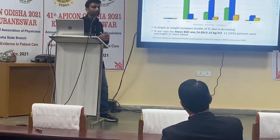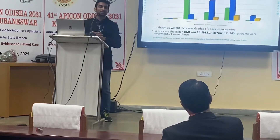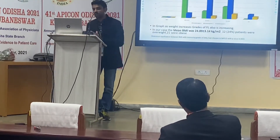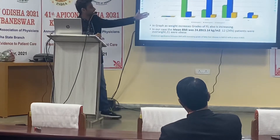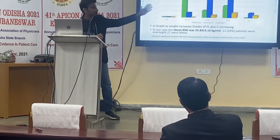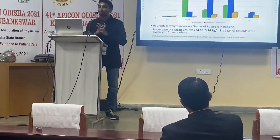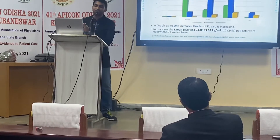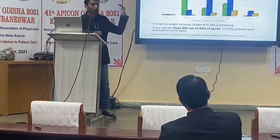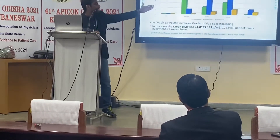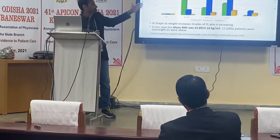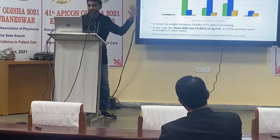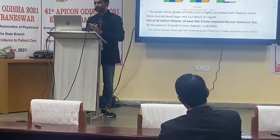The mean BMI was 24.89, which is significantly high in our study population. As shown in the graph, when BMI exceeds 30, the grade of fatty liver also increases from grade 1 to grade 3. In the highest BMI group, there is no grade 1 fatty liver — only grade 2 and grade 3 are present.